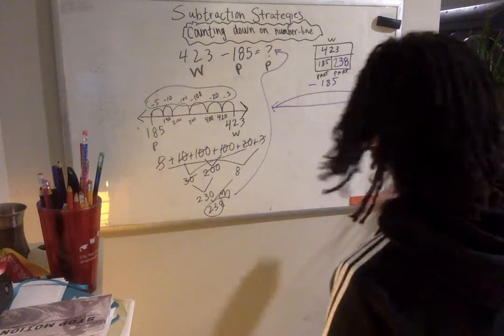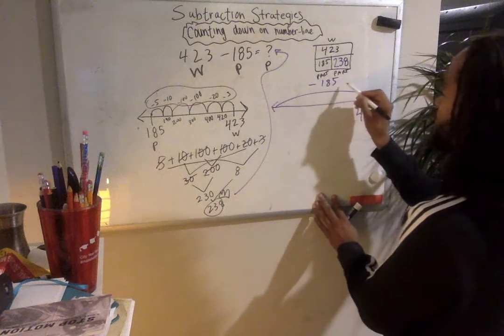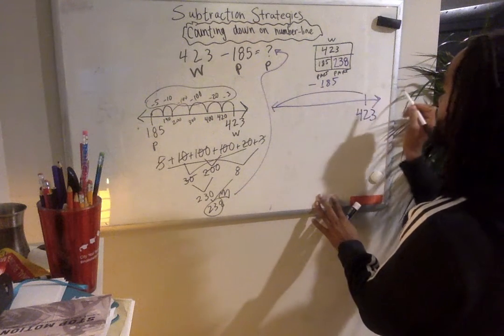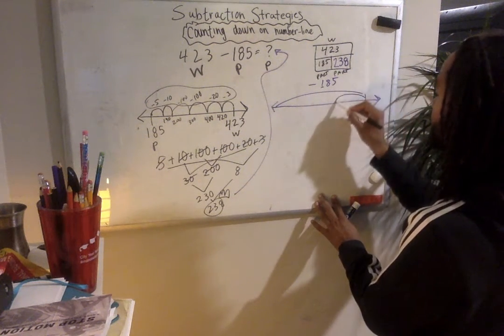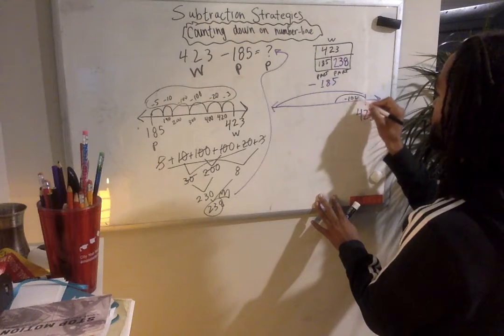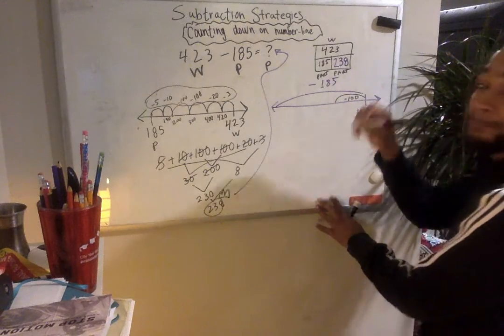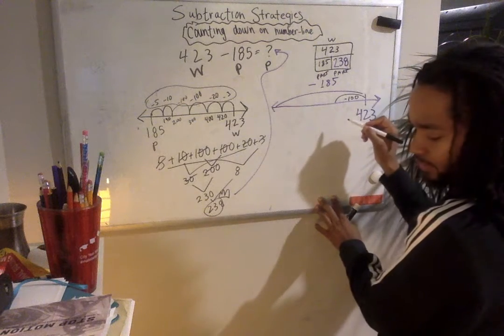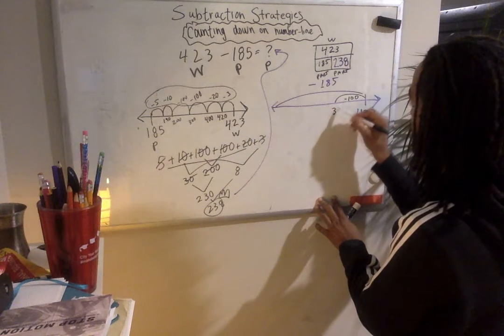First, what I want to do, 185. I'll subtract 100. Minus 100, 423 minus 100 is 323.